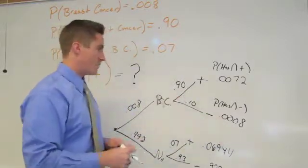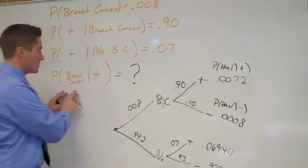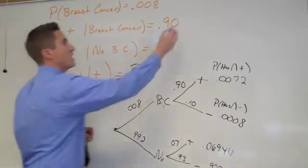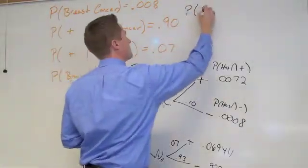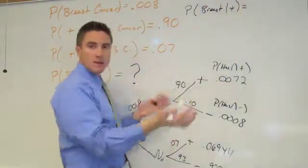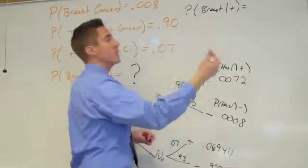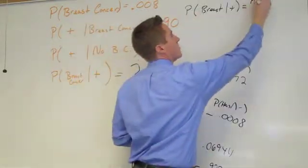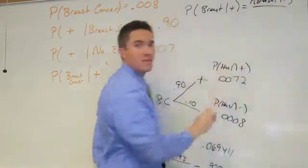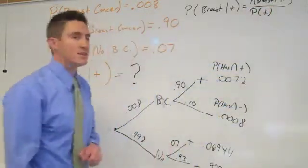The question we ask ourselves is: given that a person tests positive, what's the probability that they actually have breast cancer? Let's look at what our formula is for this using our formula sheet. This is equal to—and again, this isn't hidden, this is right on your formula sheet—so anytime you have this, you're not sure what to do, write the formula down. So this is you have breast cancer and you test positive divided by the probability that you test positive.